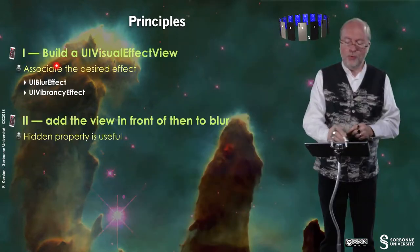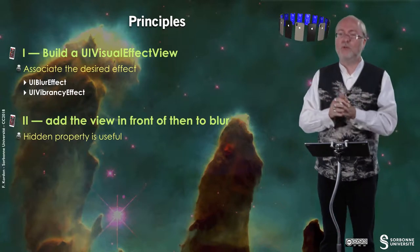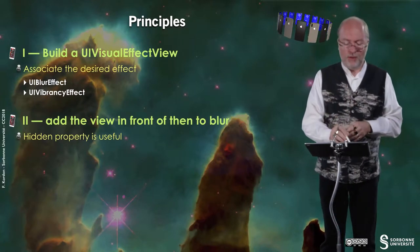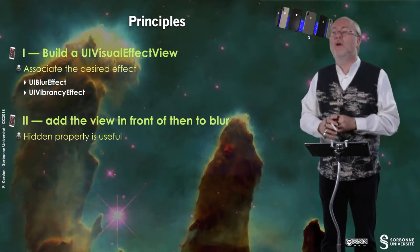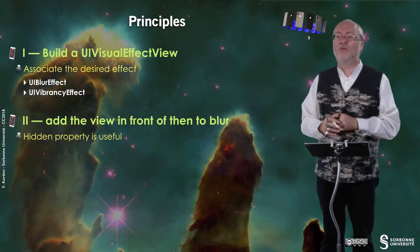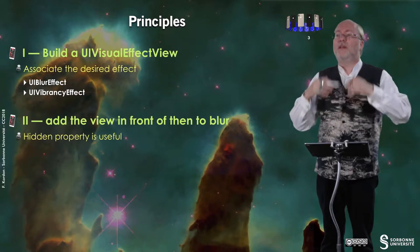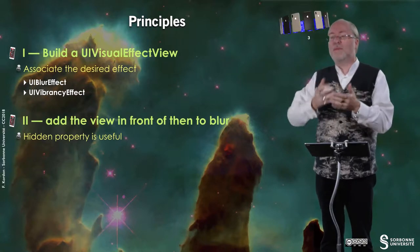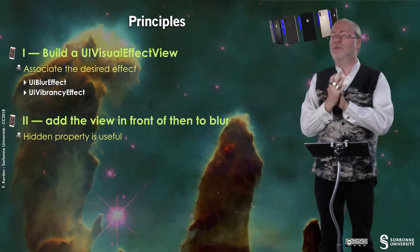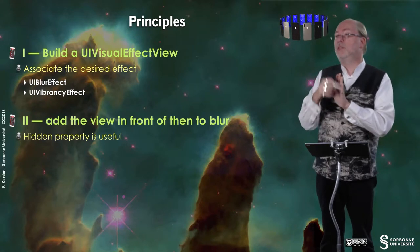So how does it work? It's quite simple. First, you build a UIVisualEffectView and you associate to it the desired effect. You have UI blur effect and UI vibrancy effect, and I will show you later what the UI vibrancy effect is. Then you add the view in front of the view you want to blur. Sometimes you can have it always in front and use the hidden property set to true.